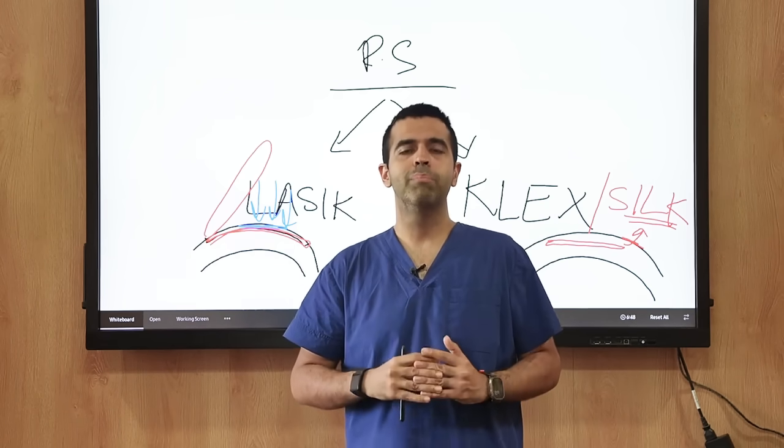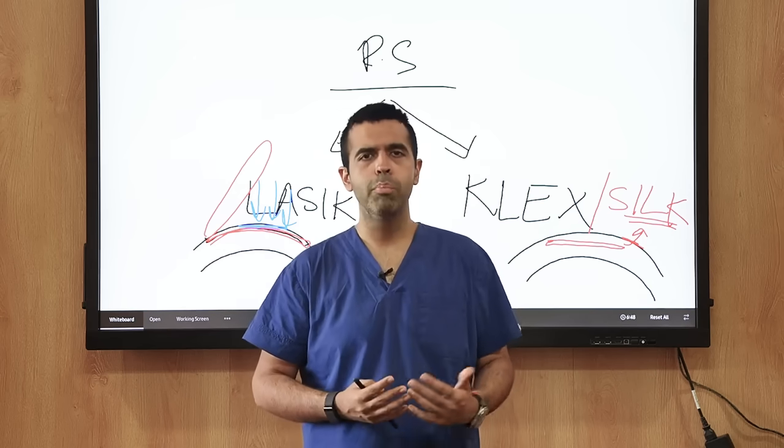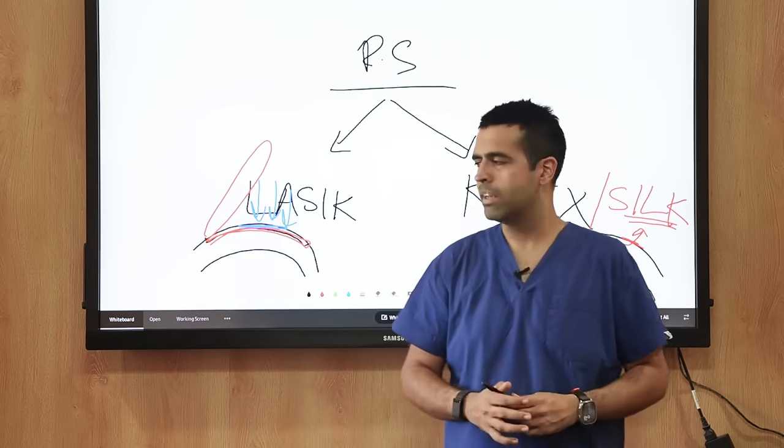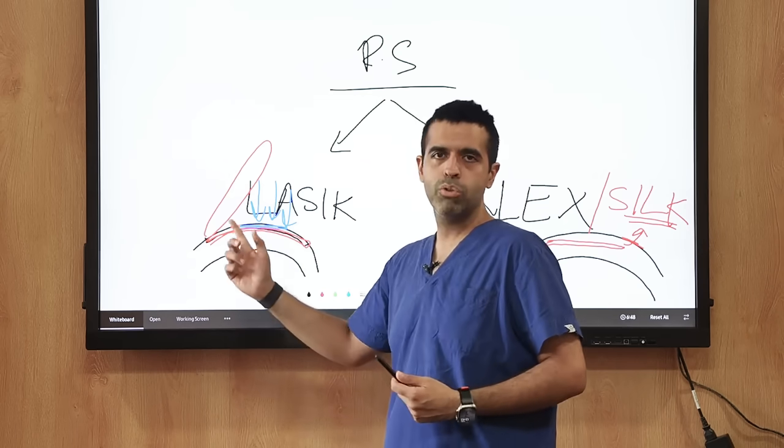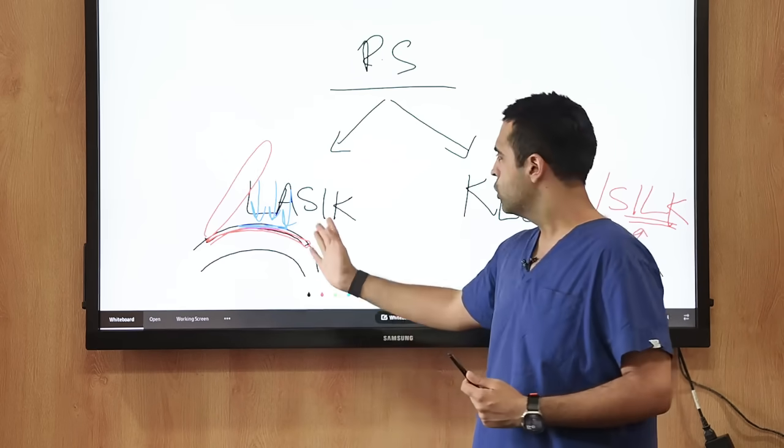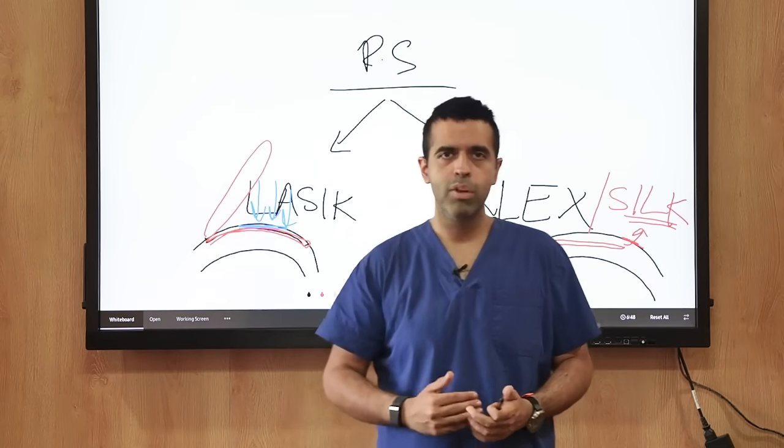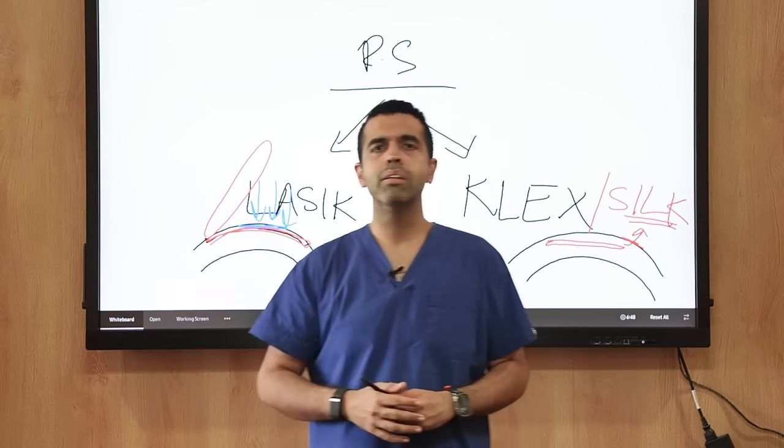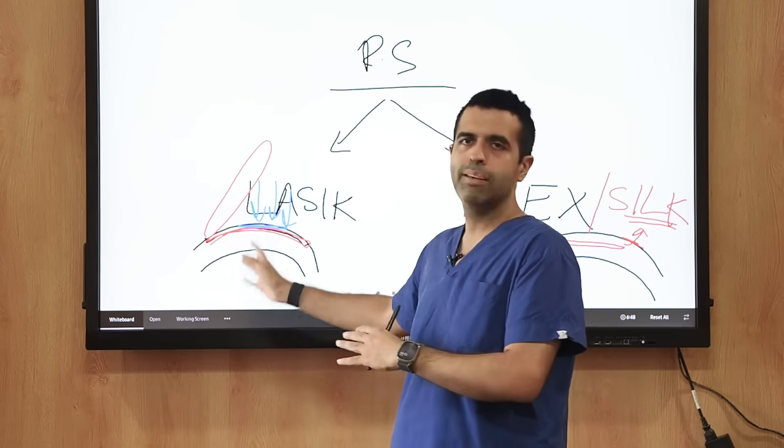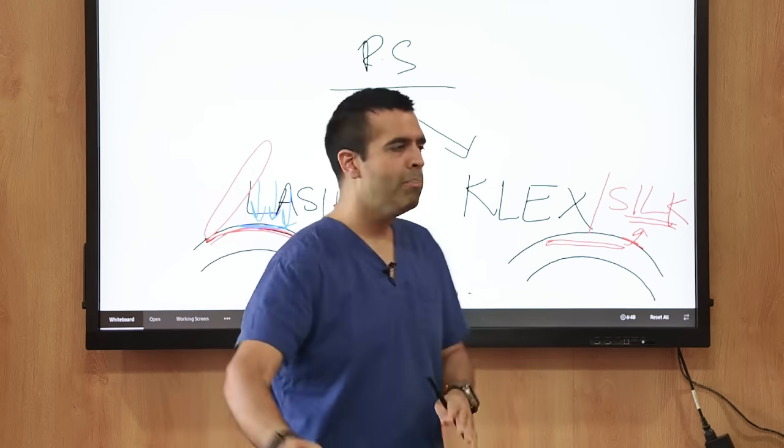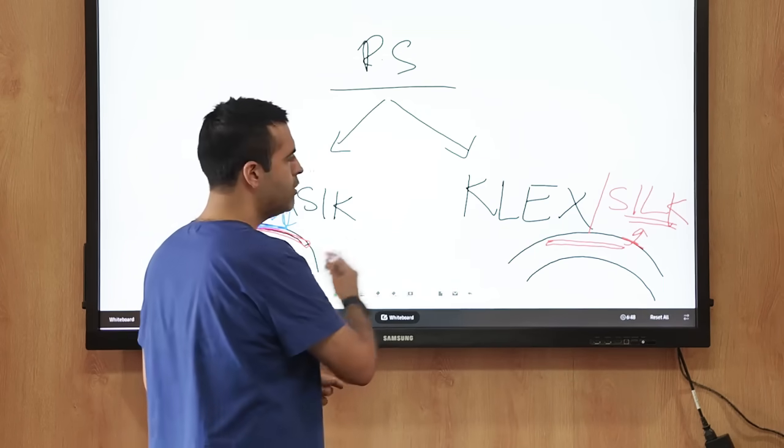Let's say you're into contact sports—if you play basketball, football, judo, karate, or probably boxing—and something hits your eye, this flap can actually get dislodged. You have to come back to your ophthalmologist and they have to place the flap back. There are certain flap-based complications that occur only in a LASIK procedure. All these complications are not there in the SILK procedure because there is no flap on the cornea.